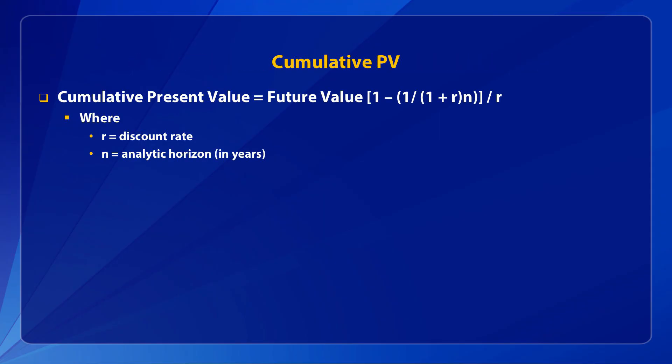If you needed to convert a whole set of common future values to present values — say $100 every year for the next 10 years — you could use the same formula and make the calculations separately for every year, or alternatively use a similar but slightly more complicated annuity formula.